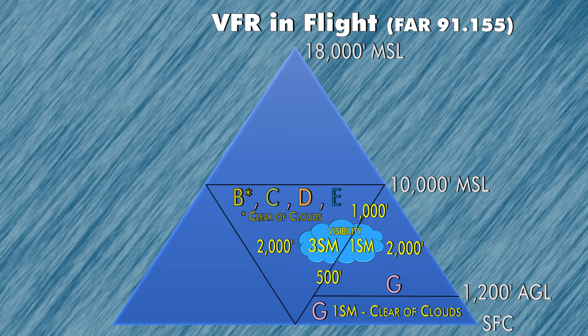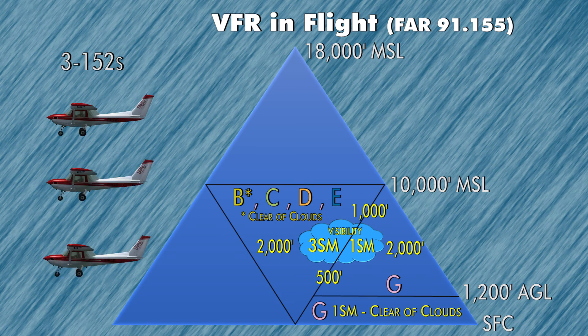Since this is the most common airspace visibility requirement, some people remember it as three 152s. You know, 152 is a Cessna, and there's three of them: three miles, 1,000 above, 500 below, 2,000 feet horizontally. Maybe that'll help you out a little bit.